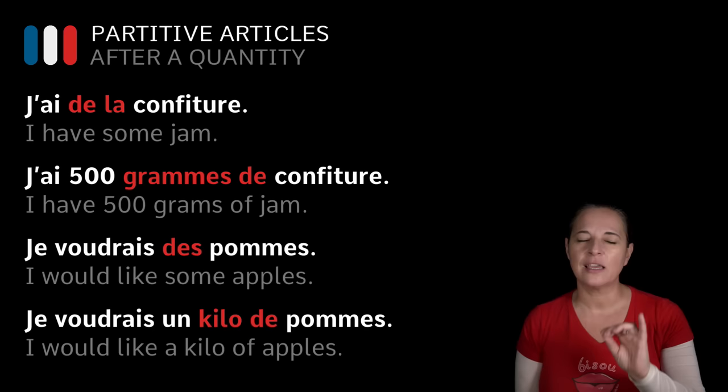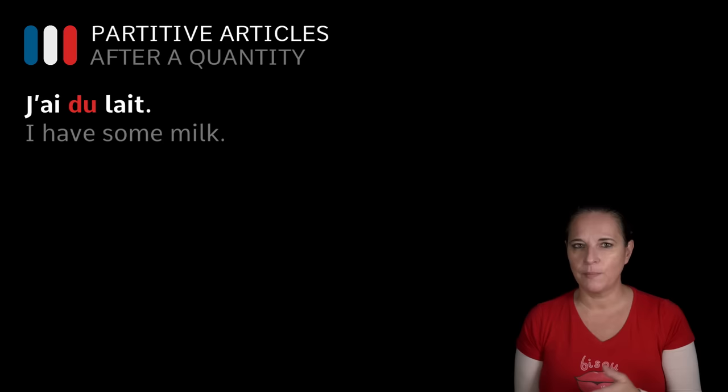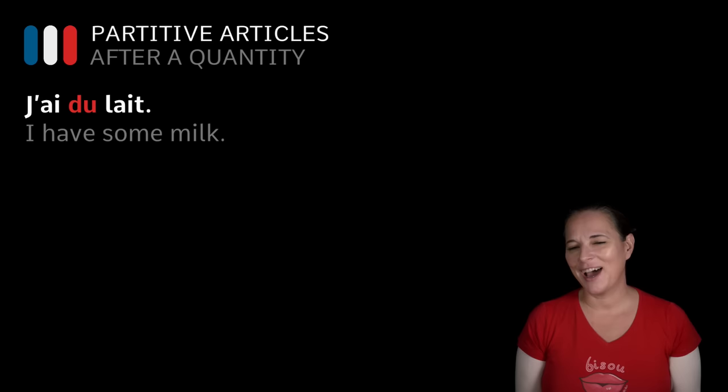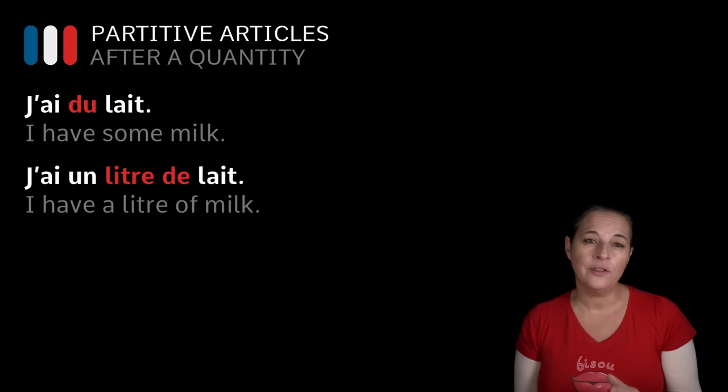Let's have a look at this one: 'J'ai du lait' — I have some milk. And we want to say I have a litre of milk: 'J'ai un litre DE lait' — not 'J'ai un litre DU lait.' So we're using DE.